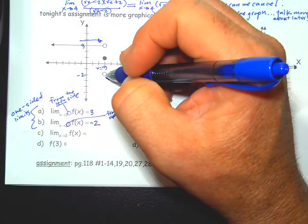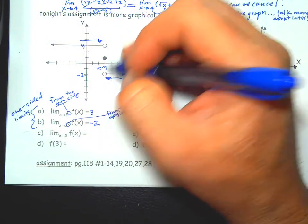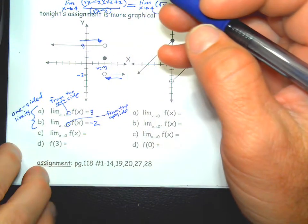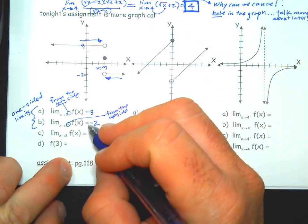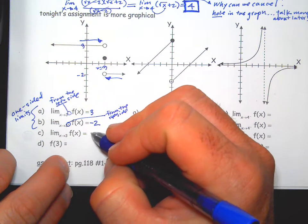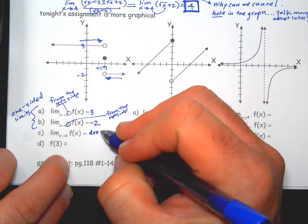So even though the function doesn't have that value there, it's approaching it. As we get super close, that's the value it looks like it's going to be. Now since these don't agree, we say does not exist.